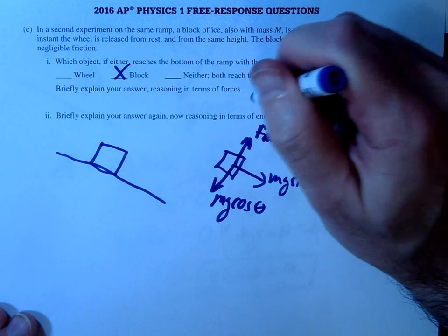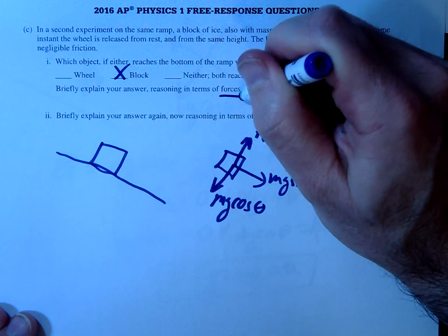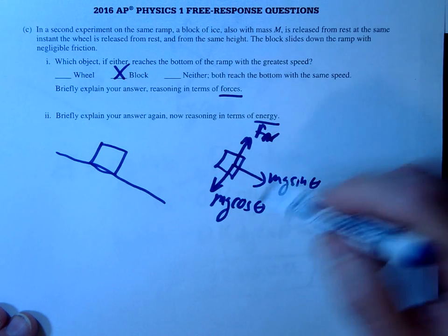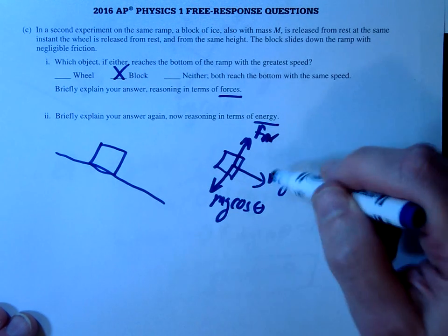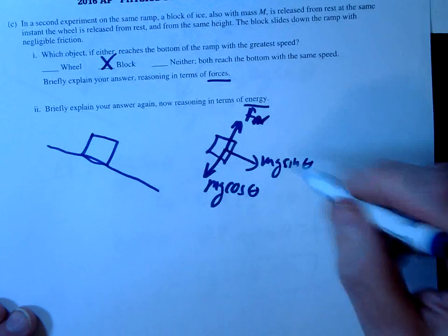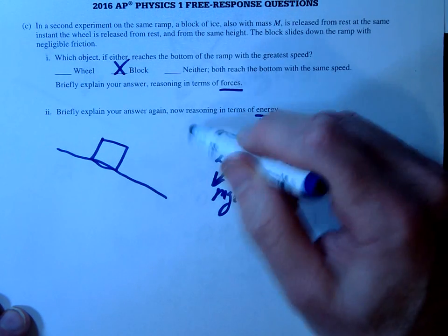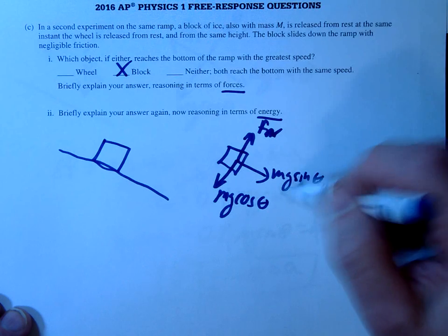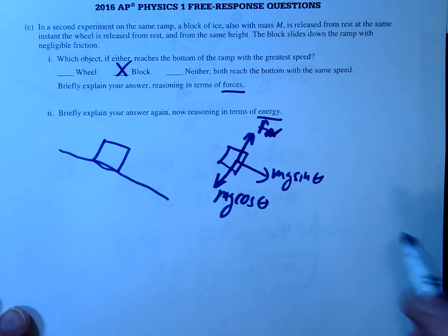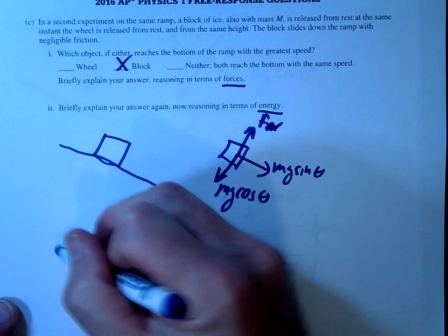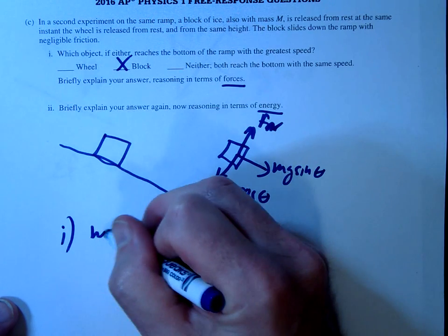And there's two reasons for this. They want you to explain it in terms of forces. They want you to explain it in terms of energy. So with forces here, hopefully you can see that there is no component of friction. So since there's no opposing force, then this would be the only force acting on it. That would be the only force pulling it down the ramp.